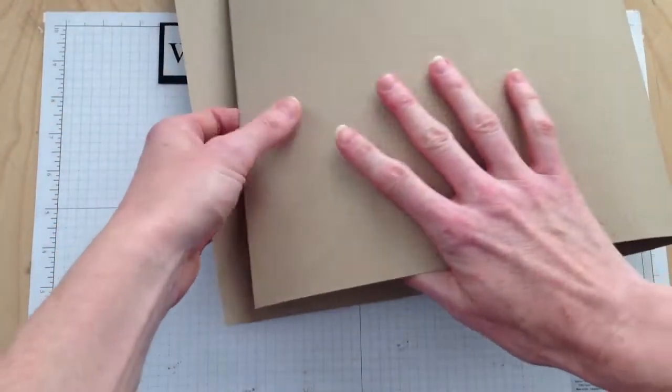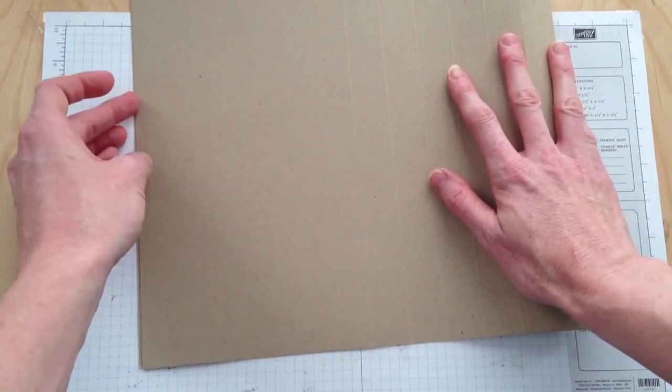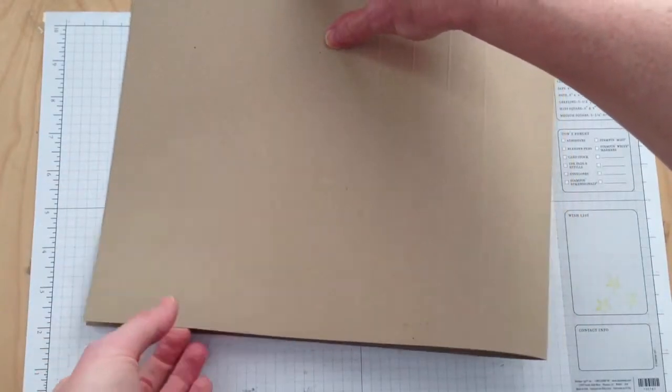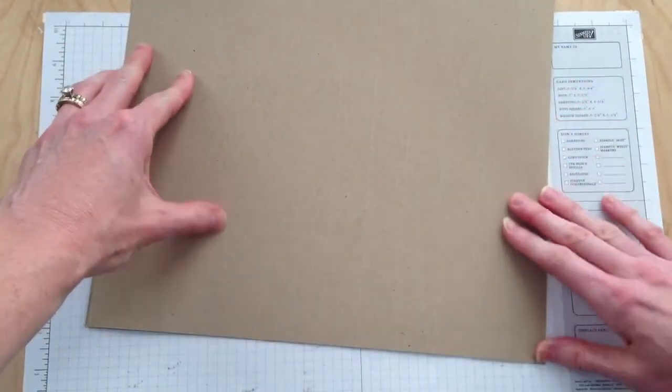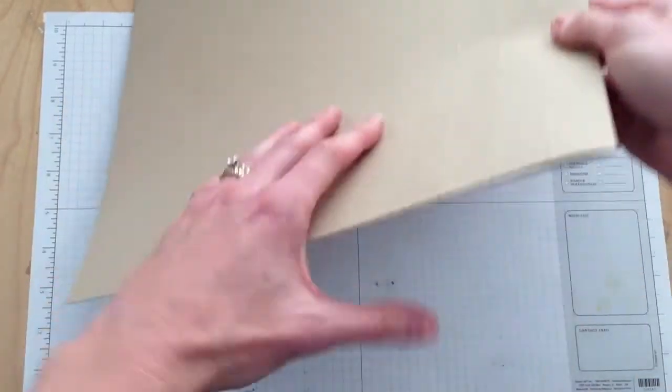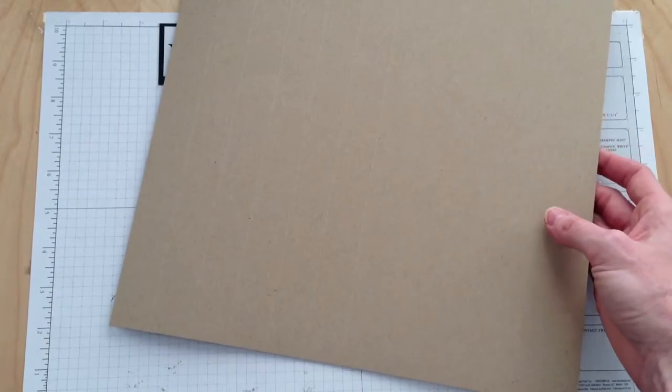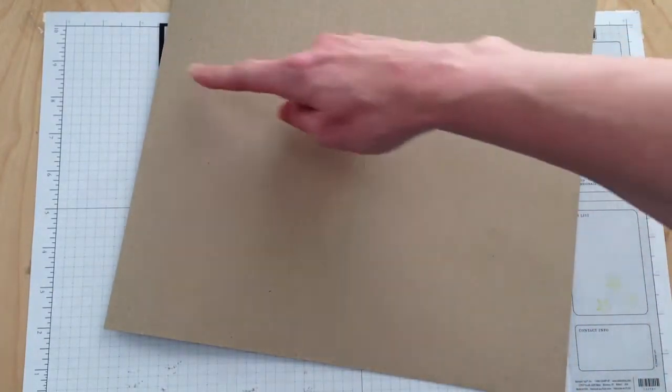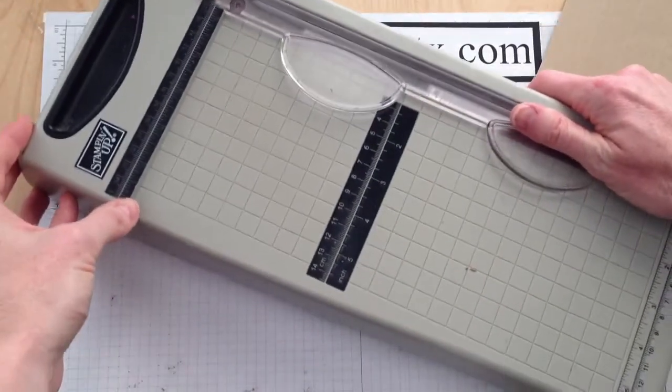I'm going to fold this in half. So now we are looking at a 12 by 12. I'm trying to get my edges lined up here. Alright, so now what we're going to do is we're going to actually get our paper trimmer into view, and we're going to cut this in half right here so that the score marks create where we're going to be folding our mountains and valley folds.